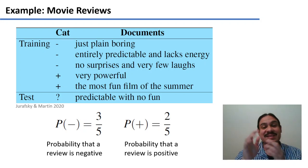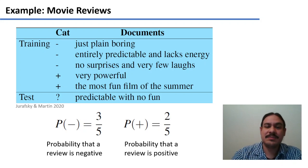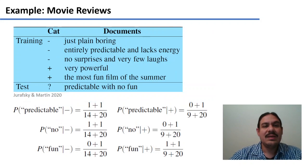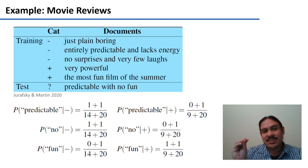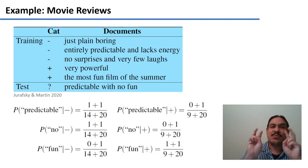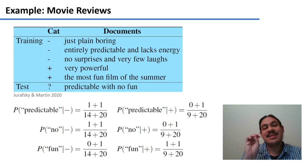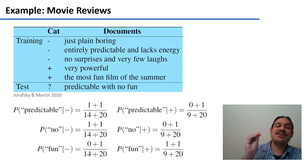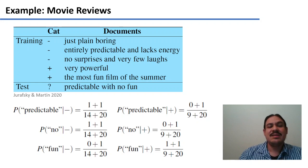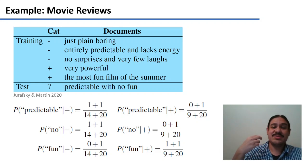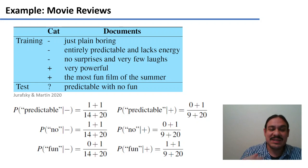So 60% and 40% are the probabilities that a review is negative or positive in the training set. The next thing we need to calculate is the probability that, given that we know a document is negative, we will see the word 'predictable'. Also, given that we know a document is positive, what is the probability of the word 'predictable'? And so forth for three features we will define: the presence or absence of 'predictable', the presence or absence of 'no', and the presence or absence of 'fun'. More accurately, how many times we see 'predictable', 'no', and 'fun' in our documents in the training set.